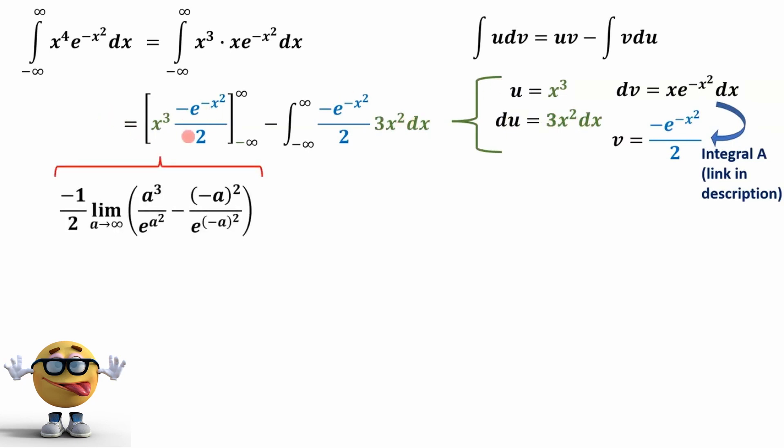From here, we can look at this term. This is called the boundary term, and we can evaluate it. Mathematicians like it as a limit, but you can think of plugging in infinity and negative infinity, although mathematicians don't like you plugging in infinity because infinity is a concept, not a number. This term here goes to zero because the denominator goes to infinity faster than the numerator, and so does this term as well. Both of these go to zero, so this whole term goes to zero.